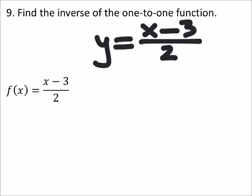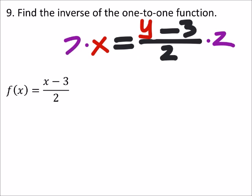And then I'm gonna solve for y. So the first thing I would do on this problem is to multiply both sides of the equation by 2, and so that's going to cancel out the denominator there.